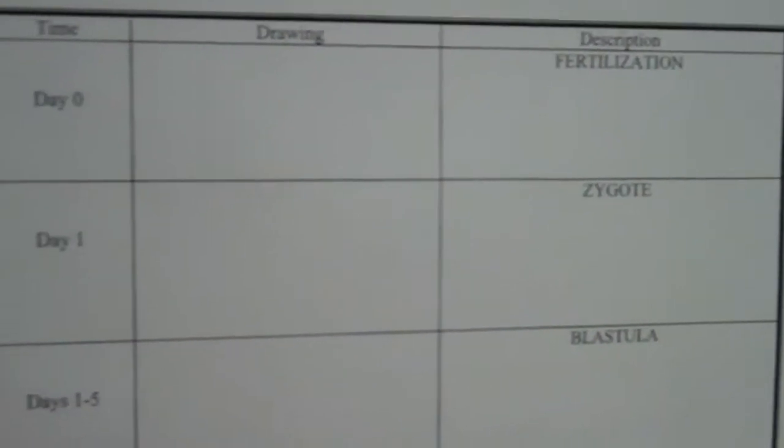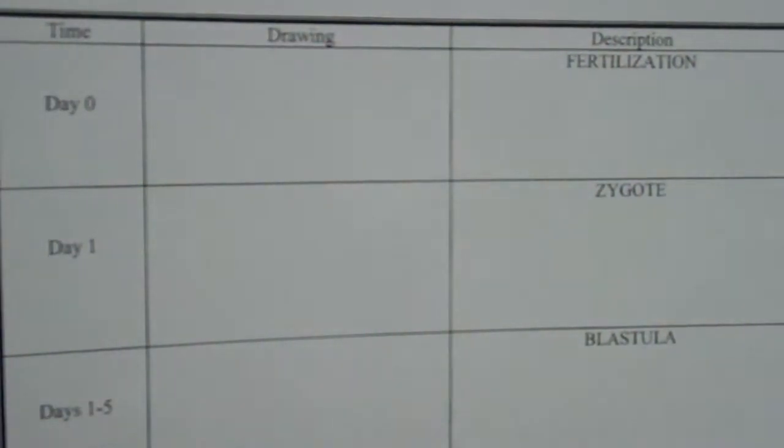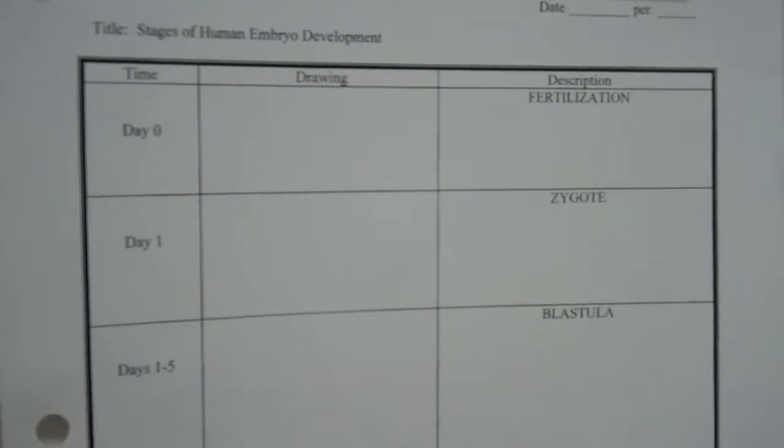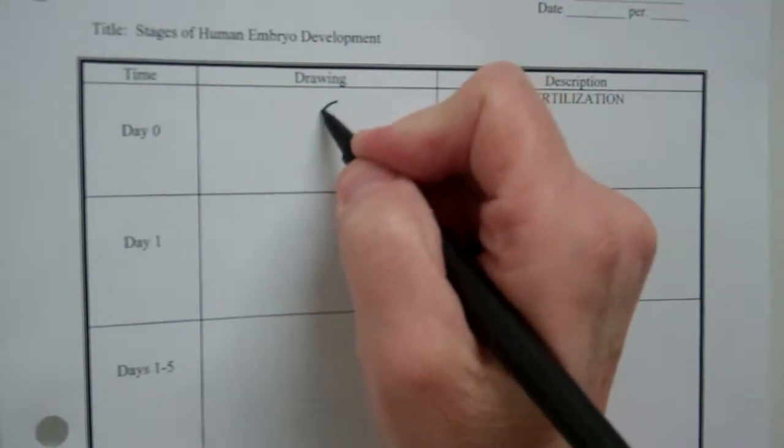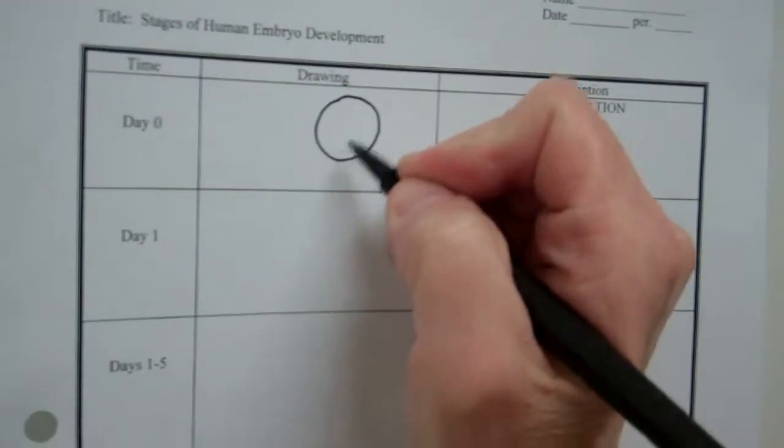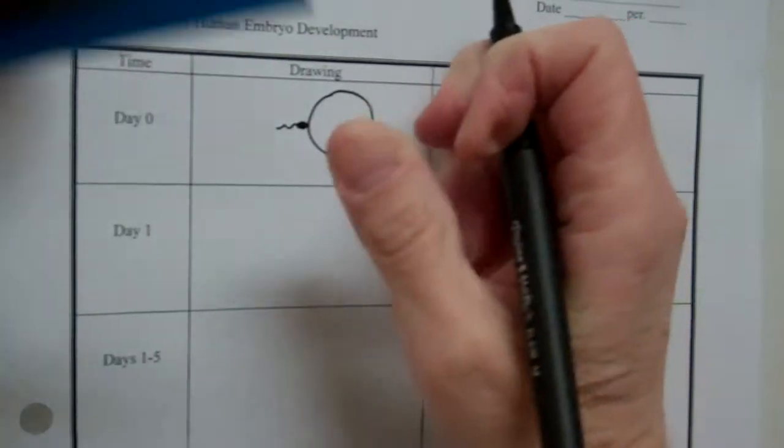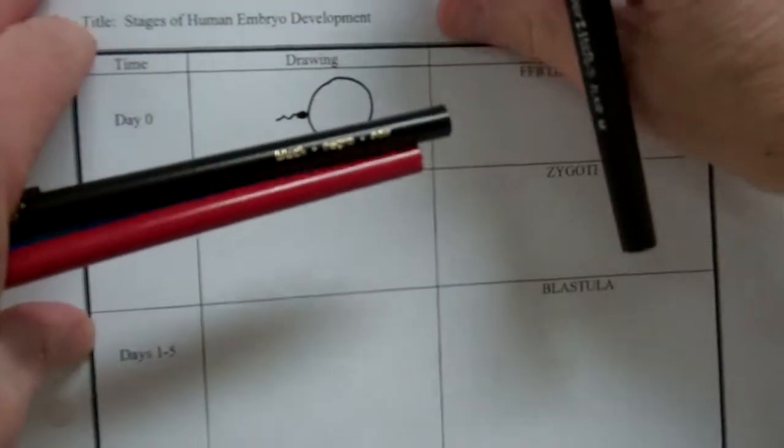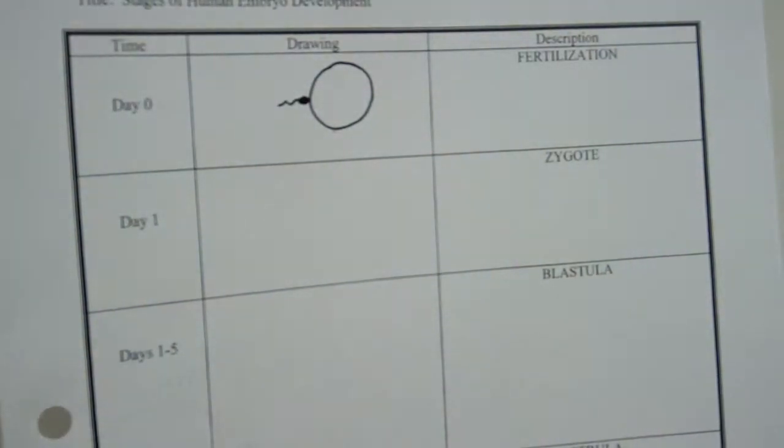The front of the worksheet is where we're going to go through the stages of development. Now, I will expect you to know these stages in order and what happens in each one and what the drawing looks like. So we're going to start with day zero. Day zero is fertilization. What does that look like? Well, here's our egg. Here's our sperm. And the egg and sperm are uniting.